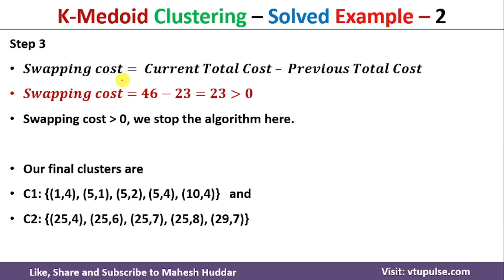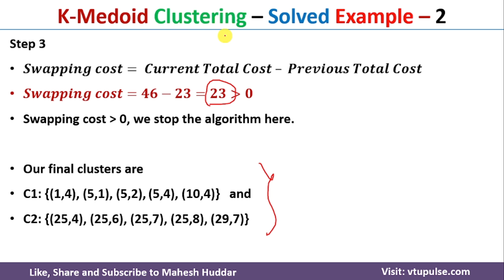Since the swapping cost is positive, the current total cost is greater than the previous total cost, meaning the previous assignment is better. We stop the algorithm here. The previous clusters — with medoids (5,4) and (25,7) — are the final clusters for this dataset. This is the process we follow in the K-medoid clustering algorithm to divide a dataset into different clusters.